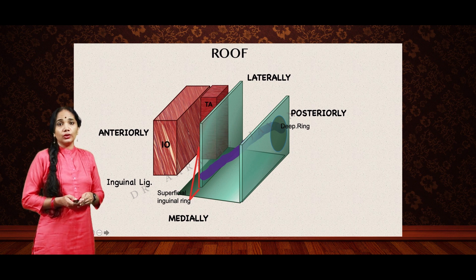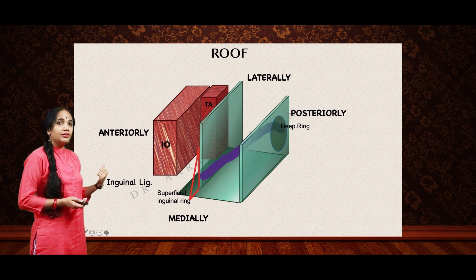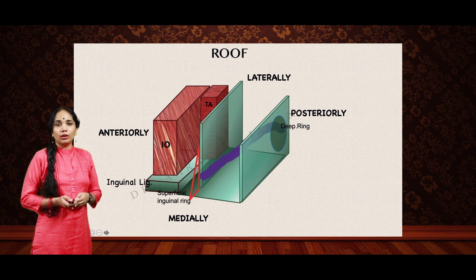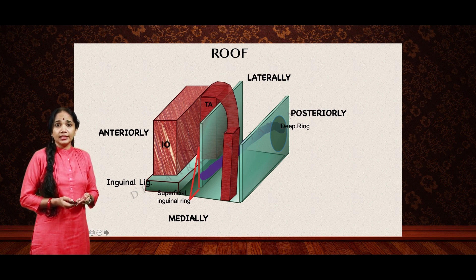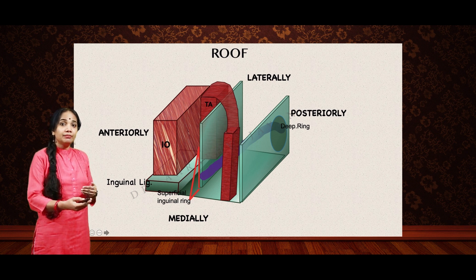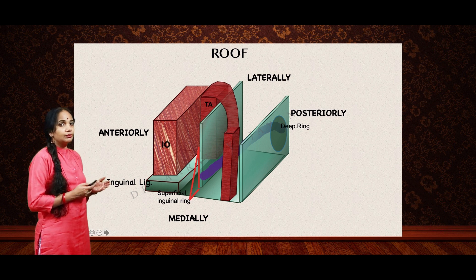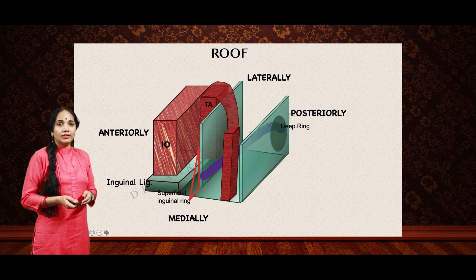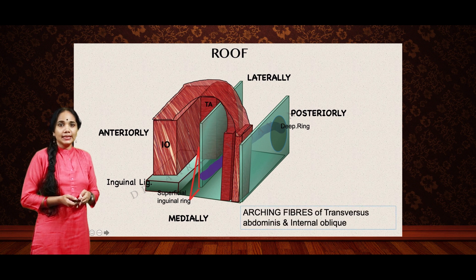Now let us look at the roof. To view the roof we slightly change the orientation — it is still the right inguinal canal, with the internal oblique and transverse abdominus visible. The superficial inguinal ring is also shown as a triangular defect. The roof is formed by arching fibers: the transverse abdominus, even though not related to the anterior wall, has fibers that cross over and reach the medial part of the inguinal canal posteriorly, forming the conjoint tendon. The arching fibers of the internal oblique also form the roof on their way to form the conjoint tendon medially. So the roof is formed by arching fibers of the transverse abdominus and the internal oblique.